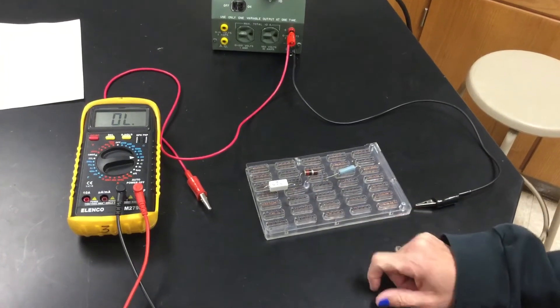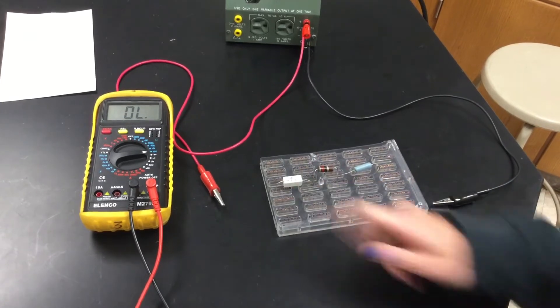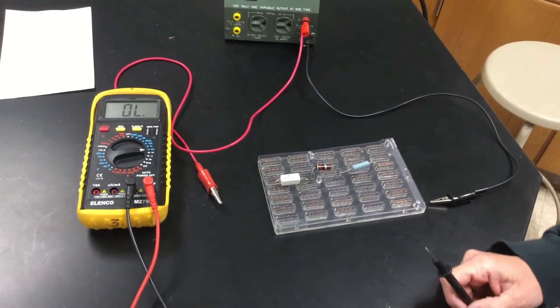So this is a series circuit. The first thing you want to do is make sure that all of the resistors are touching the metal plates on the bottom. Once you've done that, we can measure the resistances.